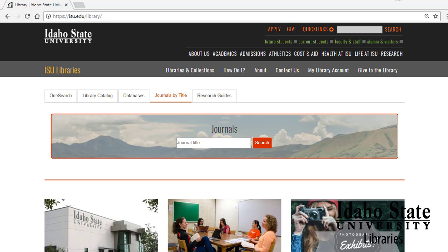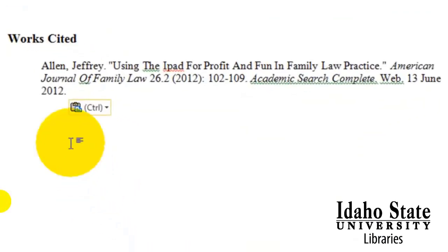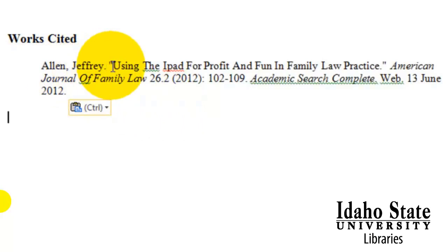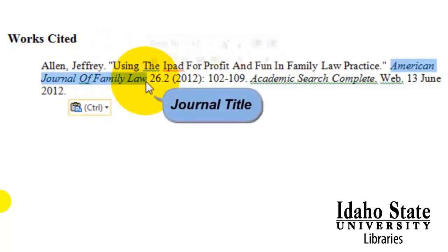The first thing to do is to look at your reference, your citation. If you have a list of articles and you need to find the full text for them, the first thing you need to do is identify the journal title, the magazine title, or the newspaper title. The easiest way to identify this is by looking at the citation — the journal, newspaper, or magazine title is italicized, and that distinguishes it from the rest.